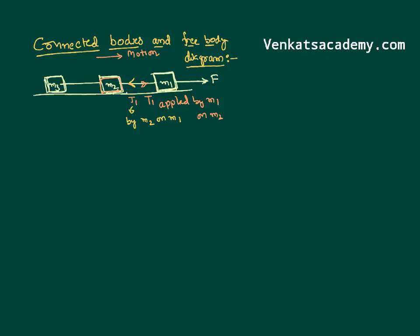So what is T1? Be careful. This T1 is applied by M2 acting on M1. I shall consider this tension when studying the motion of M1 because it is acting on M1, and I shall consider this when studying the motion of M2 because it is acting on M2. The same happens in this case also. Now, M2 pulls M3 with a tension T2. This tension is applied by M2 but acting on M3, so we shall count it when we are studying M3. M3 applies a reaction of the same value T2, applied by M3 but acting on M2. We shall always consider the forces acting on the body but not by the body.